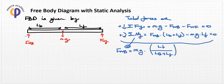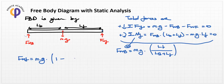This is the general notation from the second equation. Substituting the F-wheel-back value into the first equation, F-wheel-front equals m times g times (1 minus LF divided by (LF plus LB)).